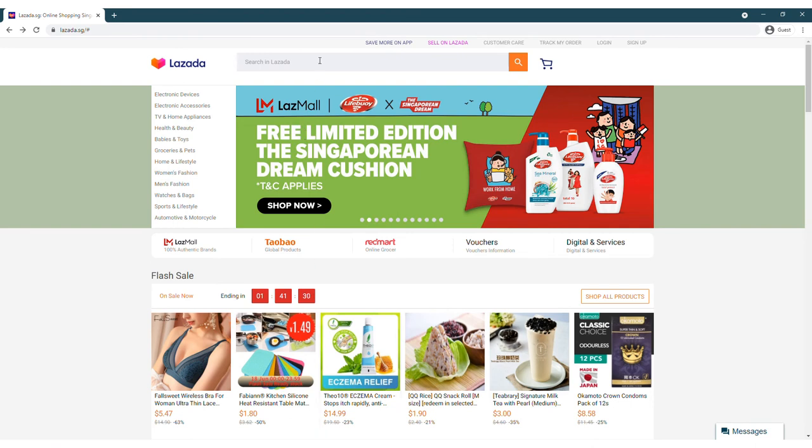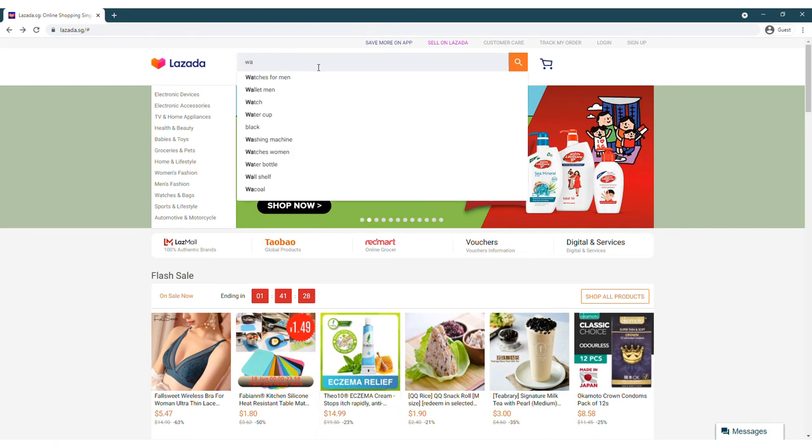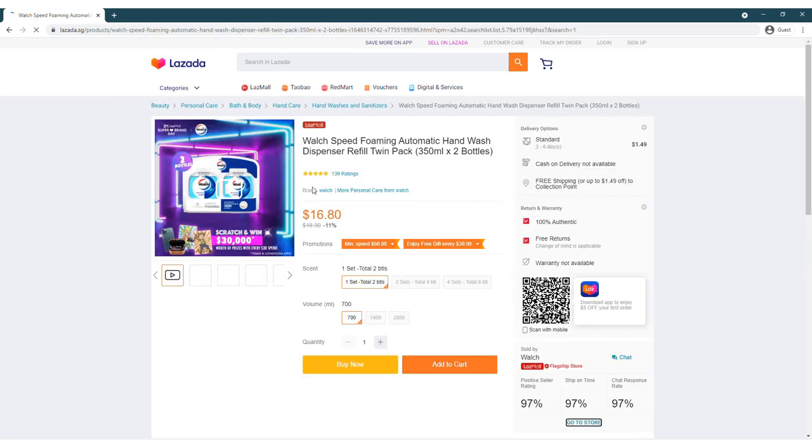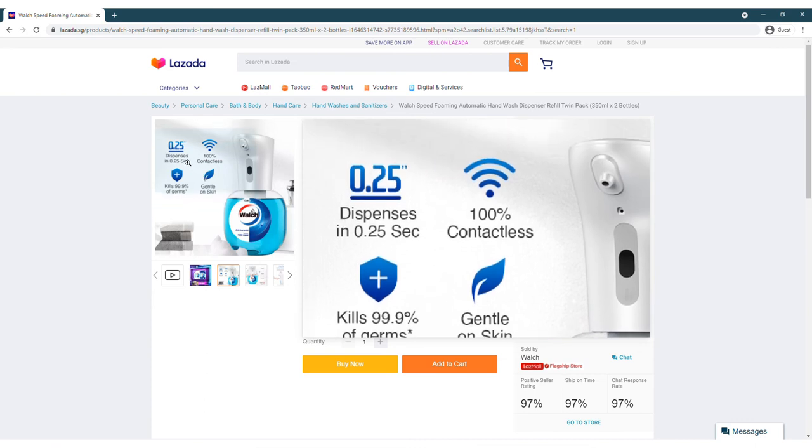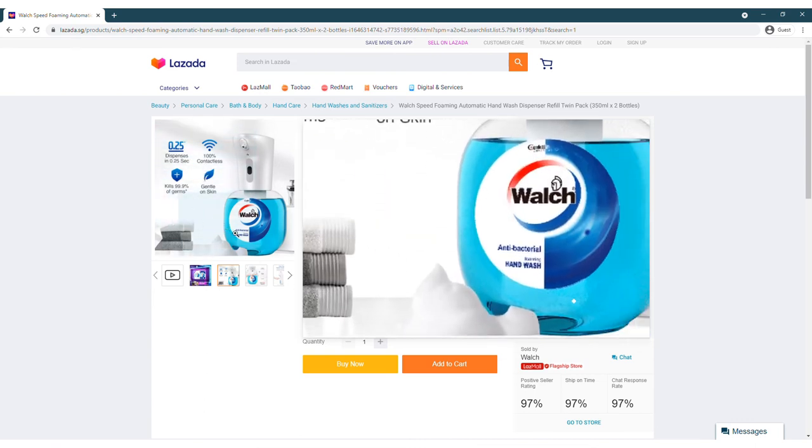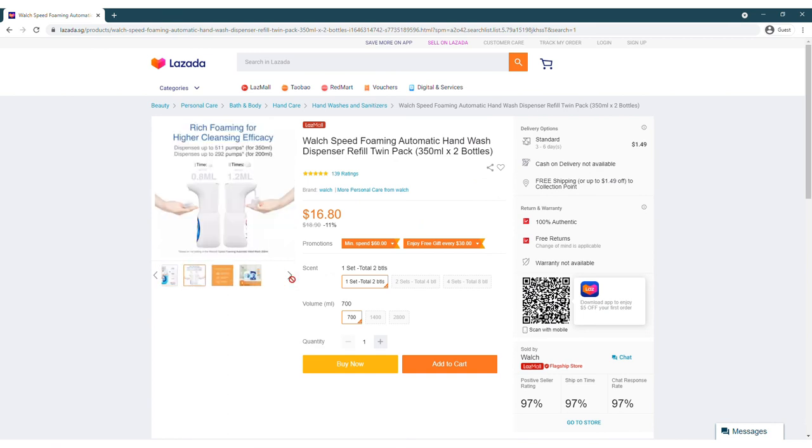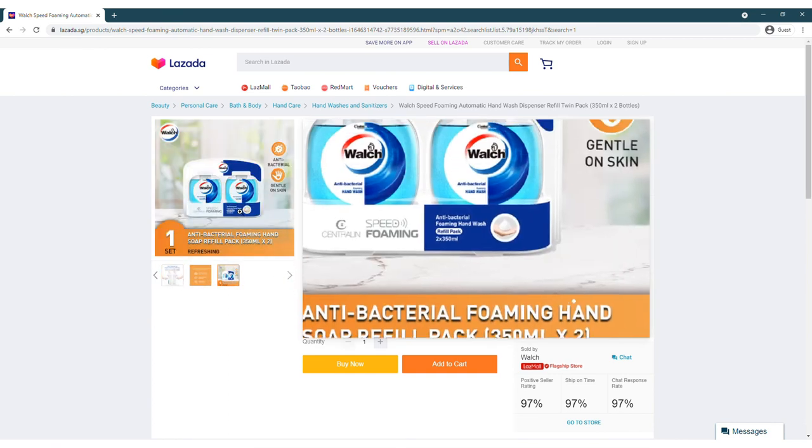So here we are at the Lazada website, and let's check out the price of refills. First, let's check out the price for the bottled versions for the auto dispenser. Here we have $16.80 for 2 bottles, and each bottle has 350ml of refreshing scent soap solution, that's for the foaming hand soap.